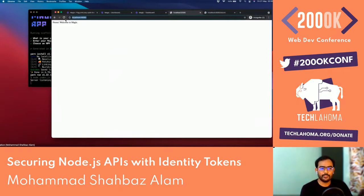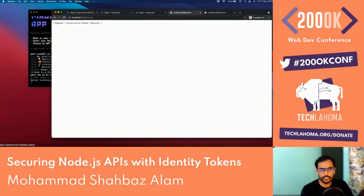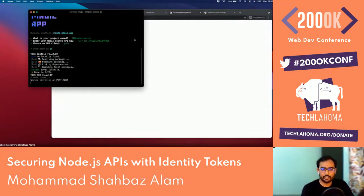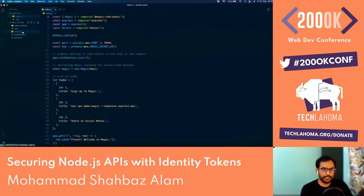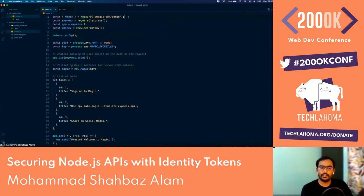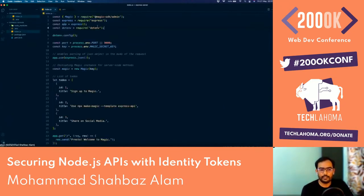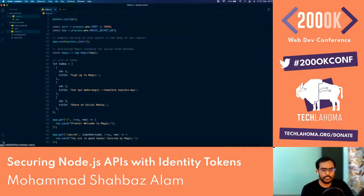Let's see how it looks. It says 'Presto, welcome to Magic.' It has multiple routes including a secret route. When you hit the secret route without a token, it says the authorization header is required. Looking at the generated code in index.js: we include the Magic SDK admin package, set up Express, store environment variables in a .env file, and instantiate the Magic server using the server-side method with the secret key.